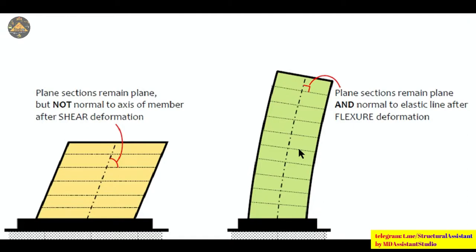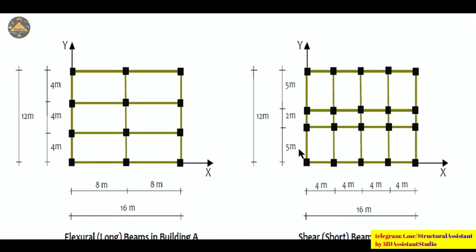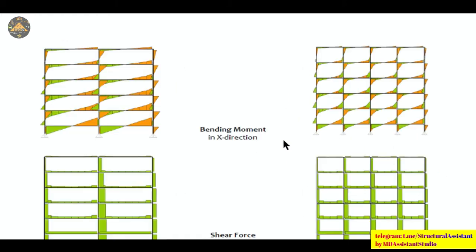In shear deformation, plane sections remain plane but not normal to the axis of the member, whereas in flexural deformation, plane sections remain plane and normal to the axis. This is the difference between shear and flexural deformation. In the example of a 12 m by 16 m arrangement with non-uniform column distribution, axial forces and bending moments are much higher where the number of members is larger.